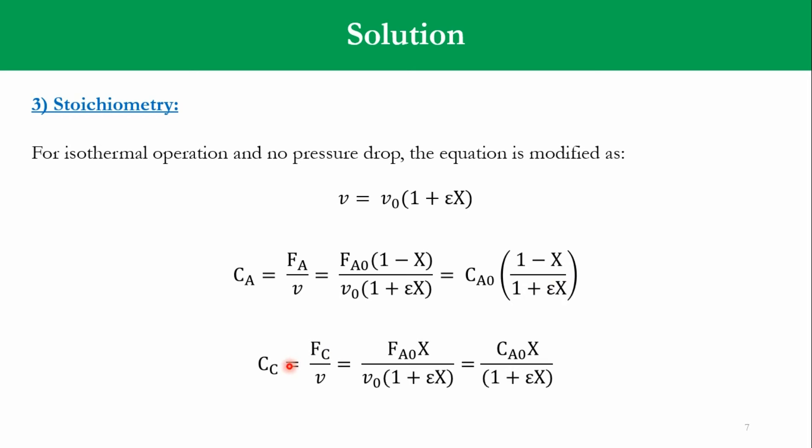Accordingly that F A naught over V naught will go to CA naught. So C of A is equal to CA naught 1 minus x over 1 plus epsilon x. In the same way C of C is equal to F of C over V, and same will be the case for C of B as well.